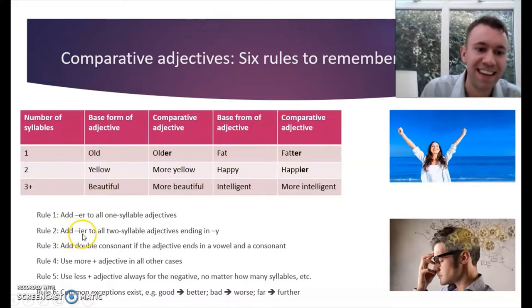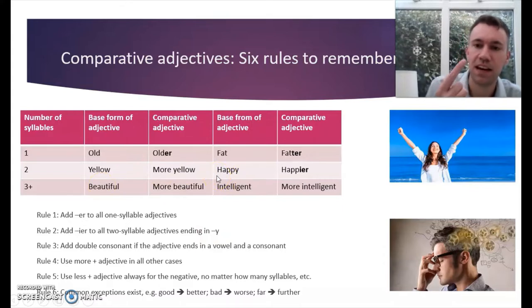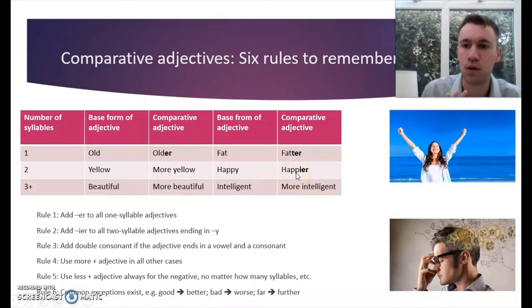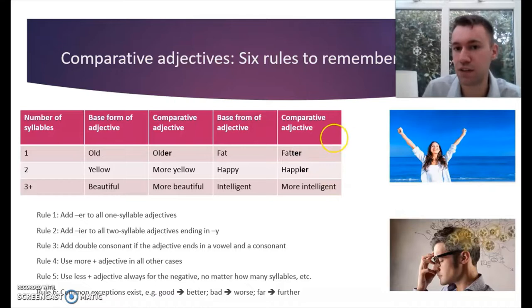Rule two: add IER to all two-syllable adjectives ending in Y. The example is 'happy' — it's two syllables and it ends in Y, therefore it becomes 'happier.' It's not 'more happy' — it is 'happier.' So, this song is happier than the other song.